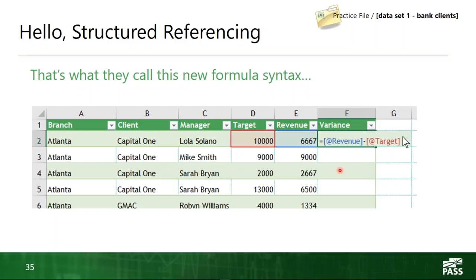Here's the deal: you create a formula inside a table. If I want to subtract my Target number from my Revenue number to see how I'm performing, normally I'd expect to see equals E2 minus D2. But you don't see any cell references here — instead you see brackets, column names, and an @ symbol. An easy way to think about it: the bracket is around the name of the column, and the @ symbol means 'current row.' Behind the scenes it's the same as equals E2 minus D2, just in this new syntax.